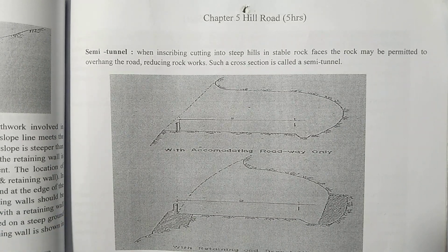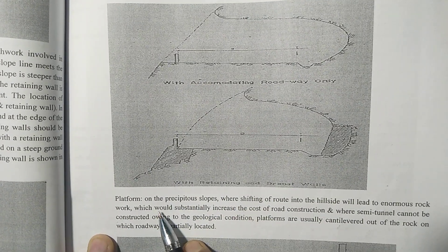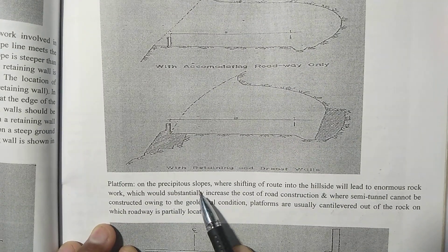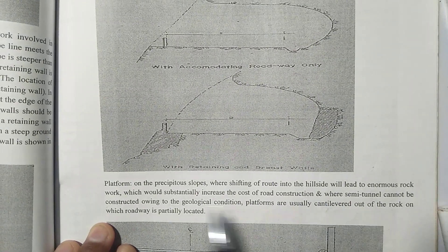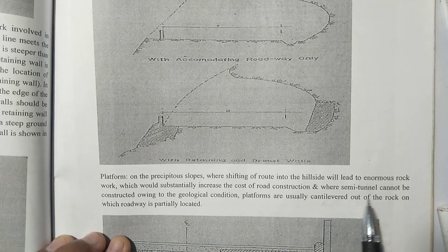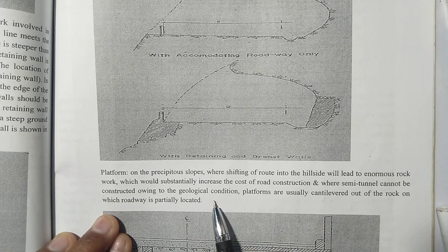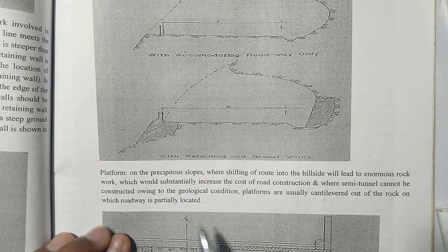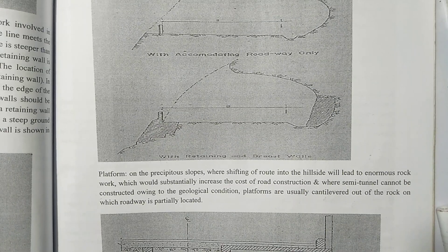On precipitous slopes, where shifting of the road into the hillside would lead to enormous rock work that substantially increases the cost of road construction, and where a semi-tunnel cannot be constructed owing to geological conditions, platforms are usually carved out of the rock on which the roadway is partially located.